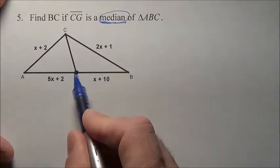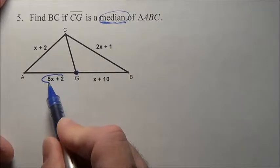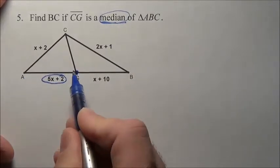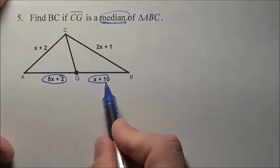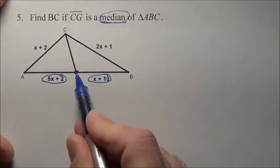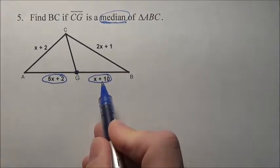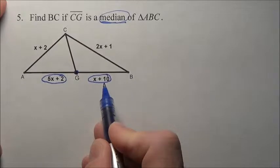Now if this guy is right in the middle, that means this expression that represents the length from A to G must be the same as the length from B to G because that's right in the center. So this expression and this expression must come out to be the same length.